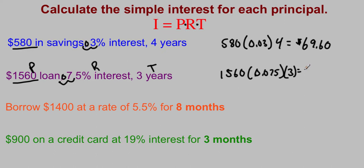After that, it's just a simple calculation, and we would get $351. So if you took out a loan for $1,560 at a 7.5% interest rate, and you borrow that money for 3 years, over that length of time, you would owe an additional $351 in interest when you went to pay it back.